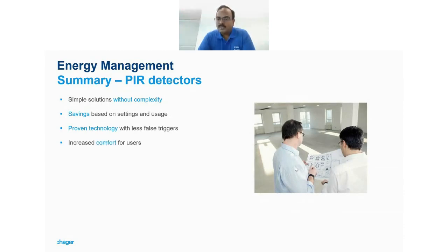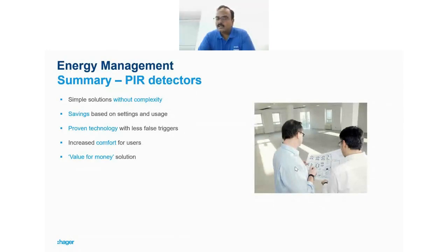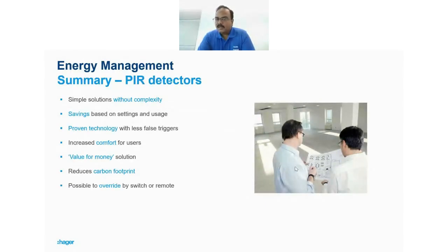PIR motion detectors also provide comfort — entering a dark room and having the light come on automatically is a comfort factor. It is a value-for-money solution, as other motion detection technologies available are quite expensive and have higher rates of false triggers even when enhanced. PIRs are most commonly preferred for fewer false triggers, an economical solution, and thereby reducing carbon footprint.